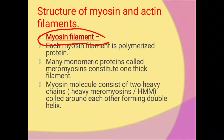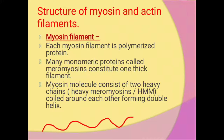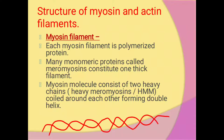First we are going to study about the myosin filament. This myosin filament is a polymerized protein. The monomeric protein is called meromyosin — this single structure is known as meromyosin, which constitutes one thick filament. This myosin molecule consists of two heavy chains, also known as meromyosin, which are coiled around each other forming the double helix. This is known as HMM — heavy meromyosin. Two heavy chains are present.